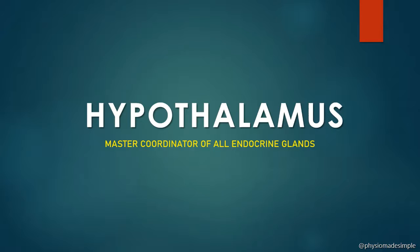The hypothalamus is the master coordinator of all endocrine glands. The pituitary gland is stimulated by the hypothalamus. The posterior pituitary releases two hormones: ADH and oxytocin. However, these two hormones are actually produced or synthesized in the hypothalamus and only temporarily stored in the posterior pituitary before being released.